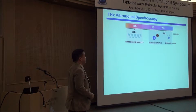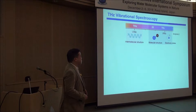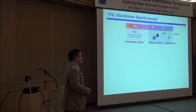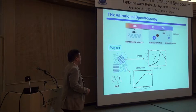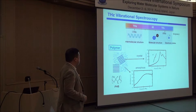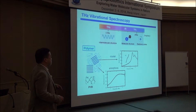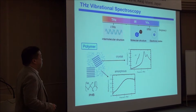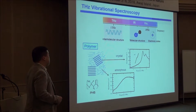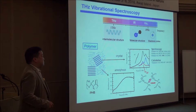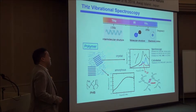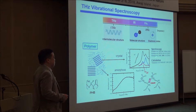For example, we see intermolecular structure in terahertz, and also when we observe large molecules we see vibrational modes. This is an example — this is an absorption spectra of the polymer PHB, our favorite polymer. When we measure amorphous PHB and crystalline PHB we see completely different spectra because it represents intermolecular conformation. Especially in the crystalline form of PHB we see some regression bands originating from the crystal structure.